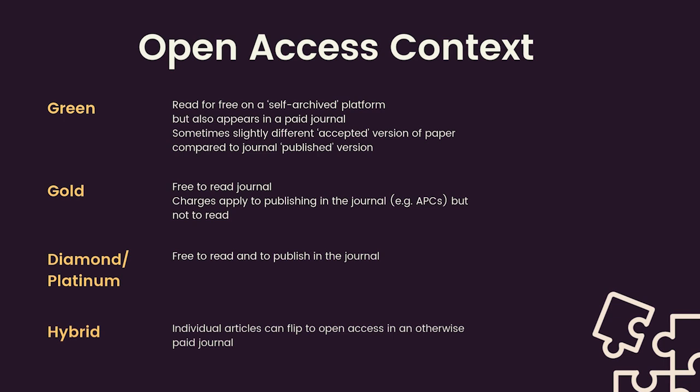For gold open access, the published version is immediately available in an open access journal, so you access the research directly through that. There can be article processing charges associated with this to fund these journals, paid by the authors or their institutions or funders, and there can be different rights of retention. There's also what's sometimes referred to as diamond or platinum open access journals, which subsidise the cost of publication and don't have charges to publish with them. Some subscription journals are hybrids, whereby if charges are paid for individual articles, they become open access.